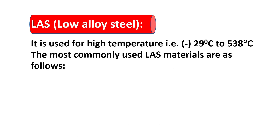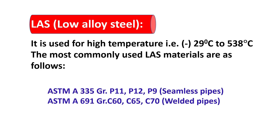LAS — low alloy steel. It is used for high temperature service, from minus 29 degrees Celsius to 593 degrees Celsius. Most commonly used LAS materials are: ASTM A335 Grade P11, P12, P9 for seamless pipe, and ASTM A691 Grade 360, 365, C70 for welded pipe.